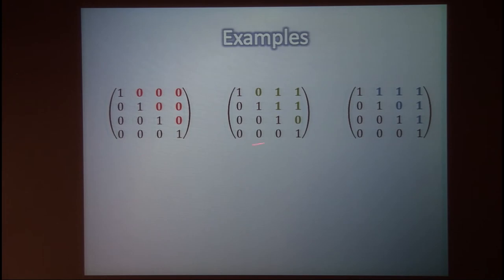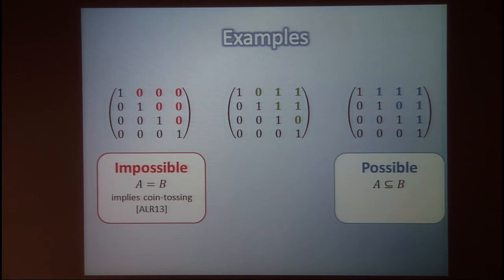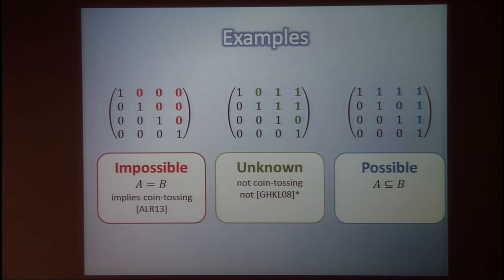Just to show how subtle things are: look at these three functions which seem very close to one another. The function on the left is impossible — this is exactly the 'a equals b' function, which implies coin tossing. The function on the right is possible. And the function in the middle is perhaps the simplest function that is left unknown. With some small differences between functions, everything can change.